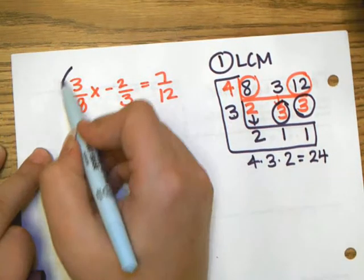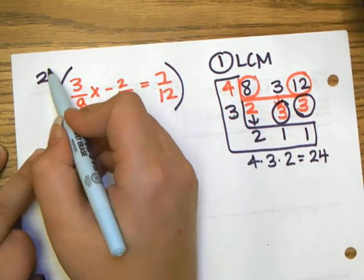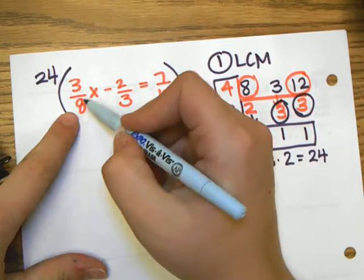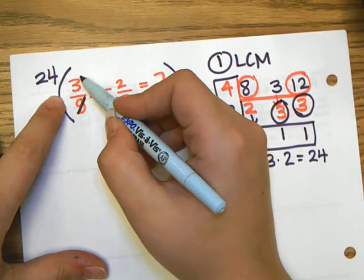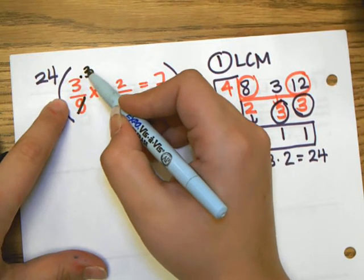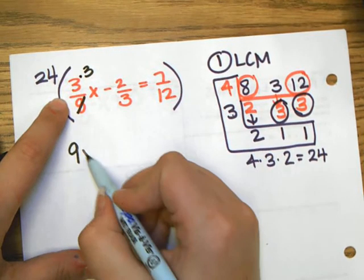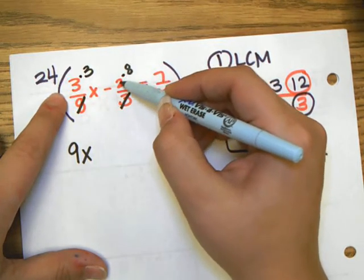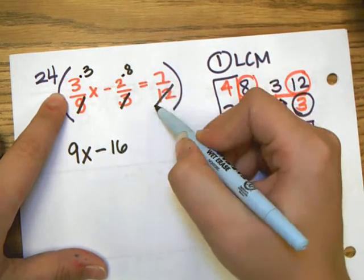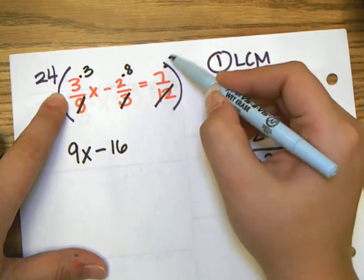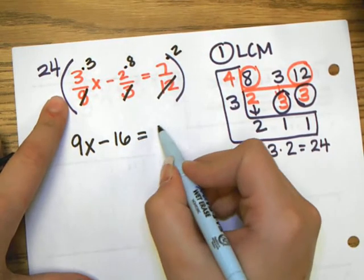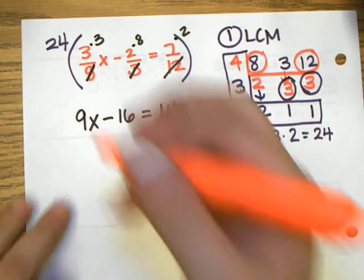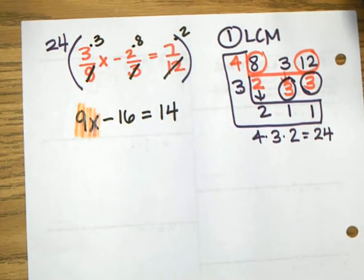That is the number we're going to multiply the whole entire equation by. Let's use some mental math here. 8 goes into 24 three times, 3 times 3 is 9, bring down the x. 3 goes into 24 eight times, 2 times 8 is 16. 12 goes into 24 twice, so 7 times 2 is 14.